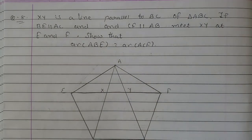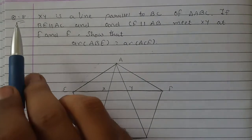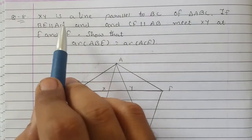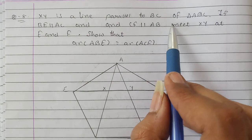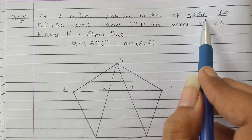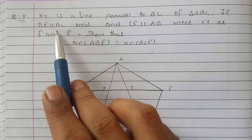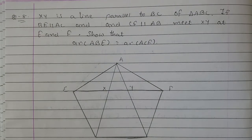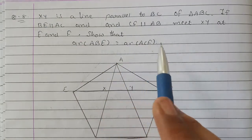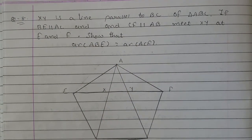Hello students, in this session we will continue with exercise number 9.3, question number 8. XY is the line parallel to BC of triangle ABC. If BE is parallel to AC and CF is parallel to AB, show that area of triangle ABE is equal to area of triangle ACF.